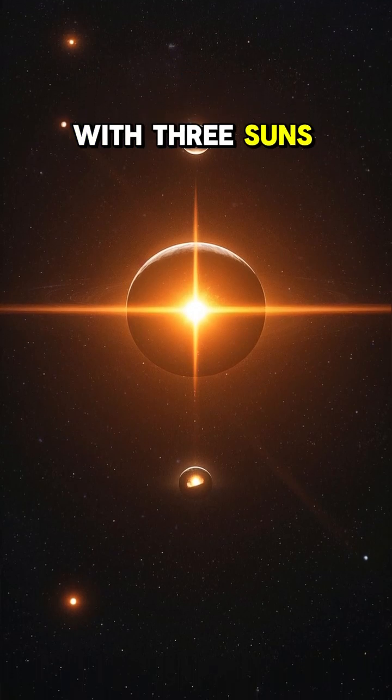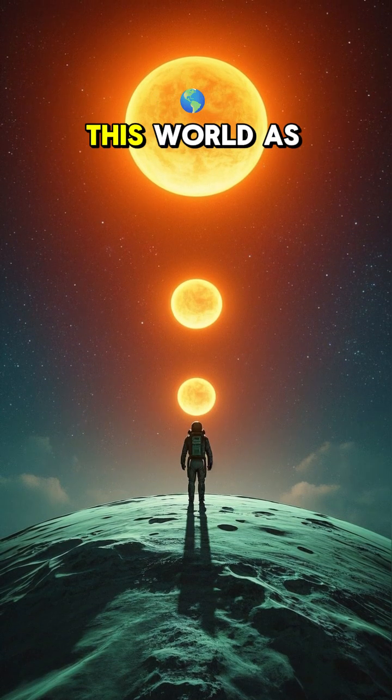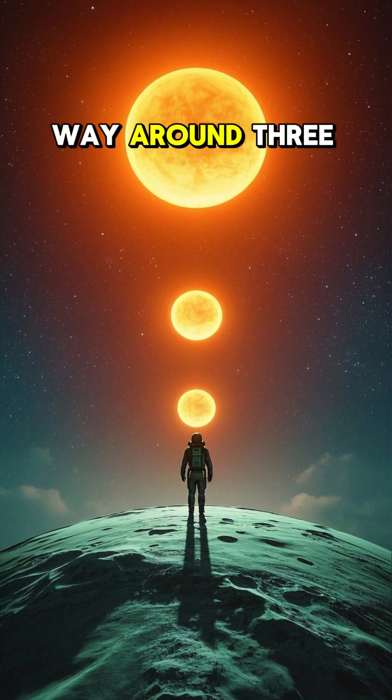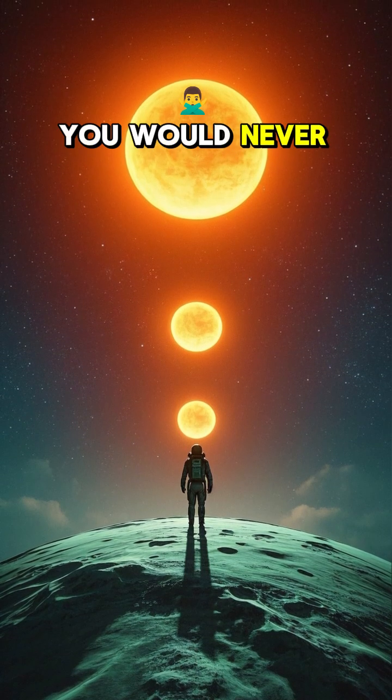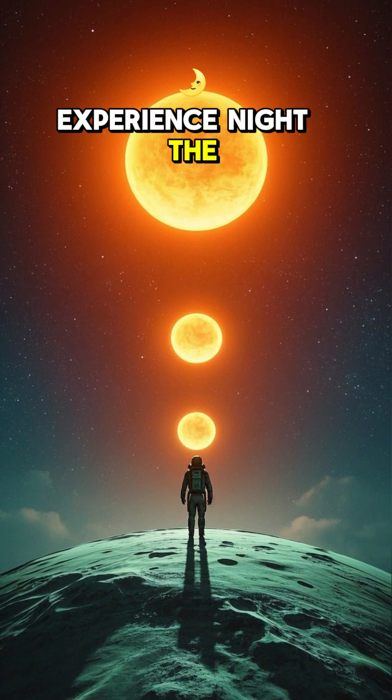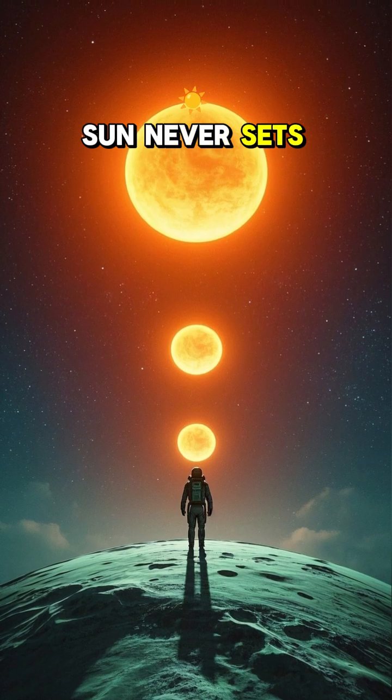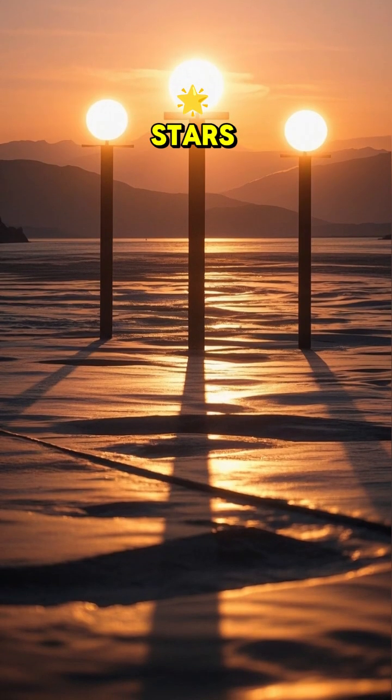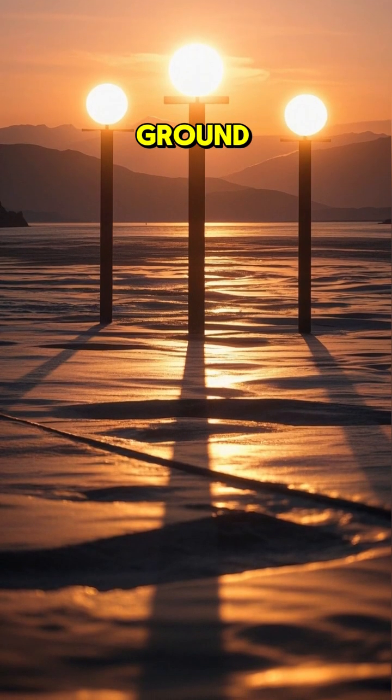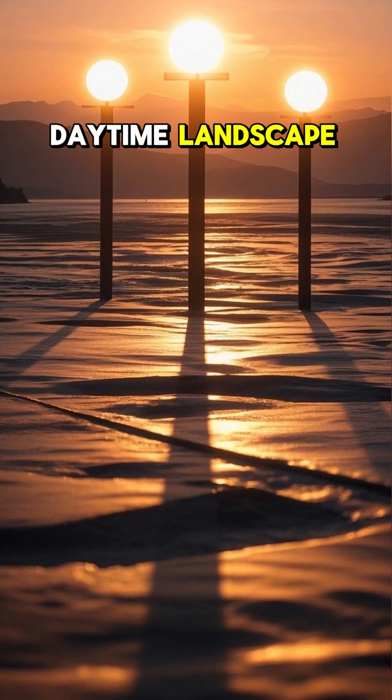There is a planet out there with three suns. Imagine standing on this world as it makes its way around three stars. You would never experience night. The sun never sets. And the light from these three stars would cast triple shadows on the ground, creating an eerie daytime landscape.